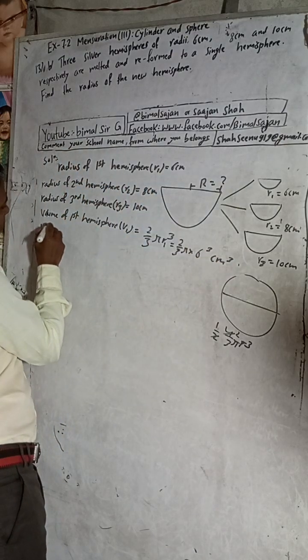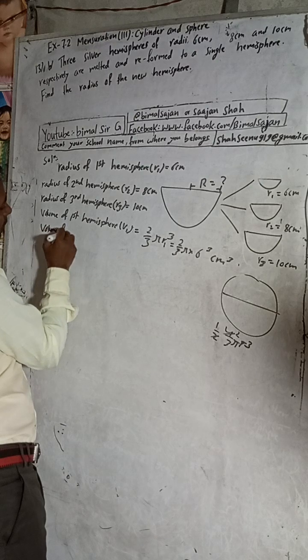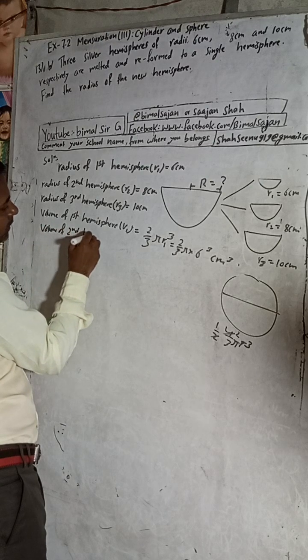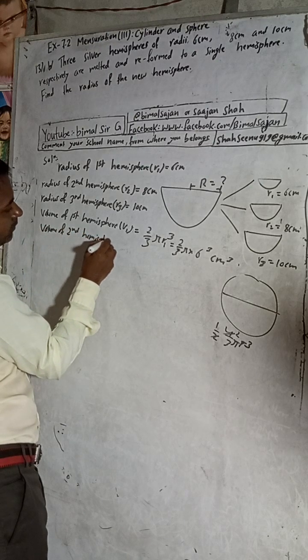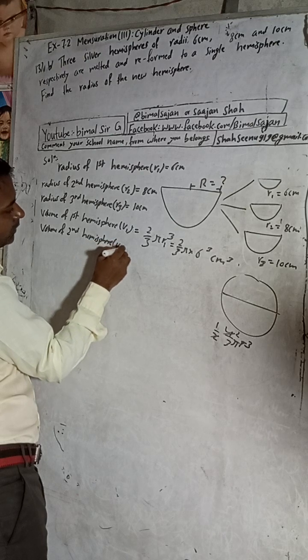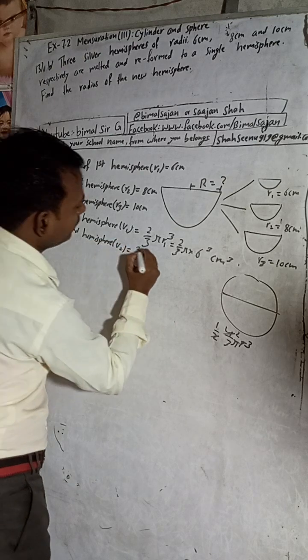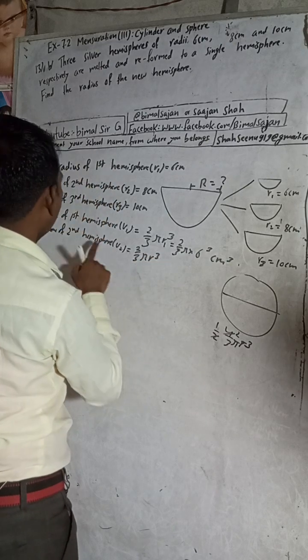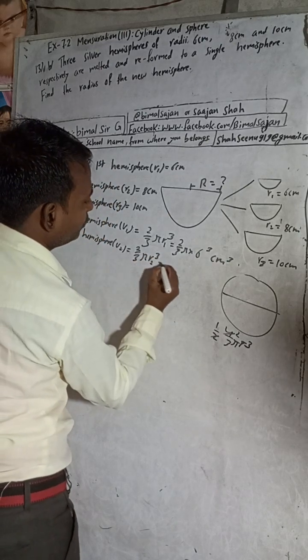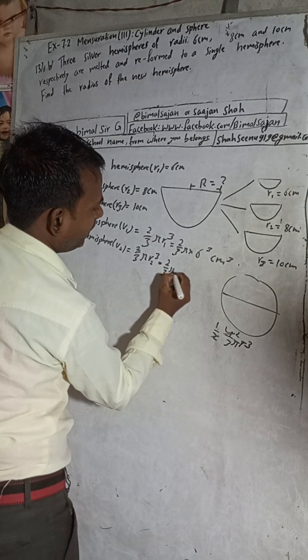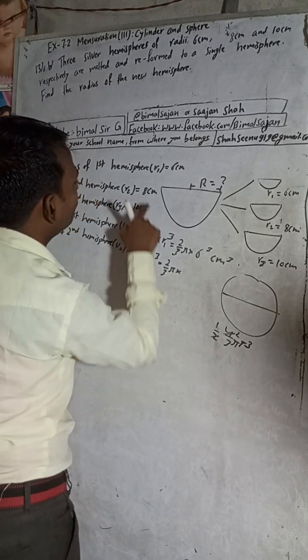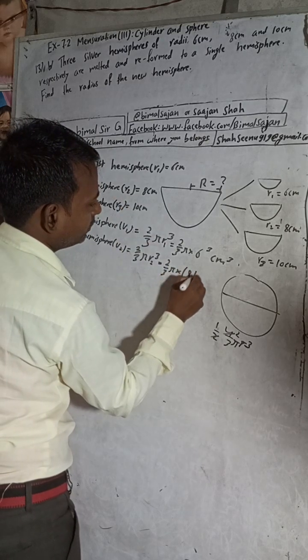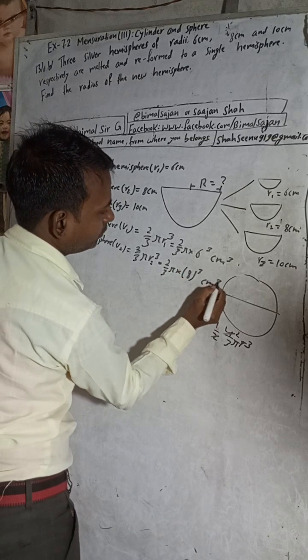Now volume of second hemisphere V2 is equal to 2 by 3 pi R³. But here, second volume radius is 2, so R2. 2 by 3 pi into R2, so R2 is here 8, 8 cube, cm³, centimeter cube.